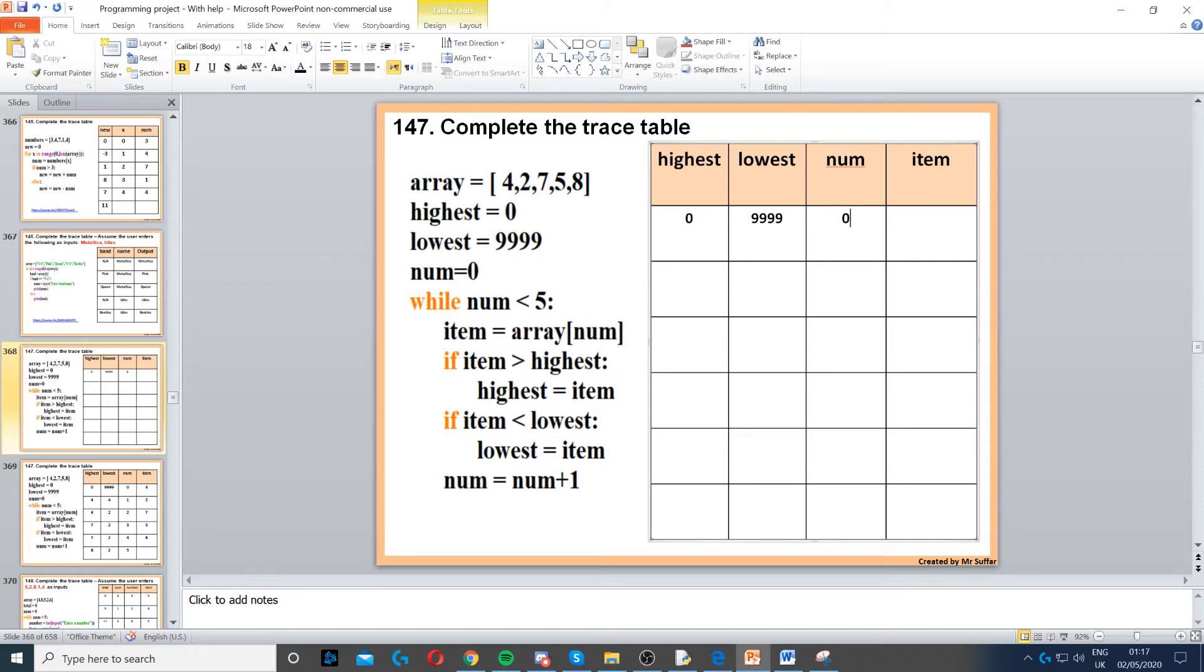While num is less than 5, so while 0 is less than 5, that's true. Because it's true, we enter the loop. Now this is where it gets slightly complicated. Item is equal to array num, so array is our array, num is the index number. At the moment num is 0, so index 0 is 4.